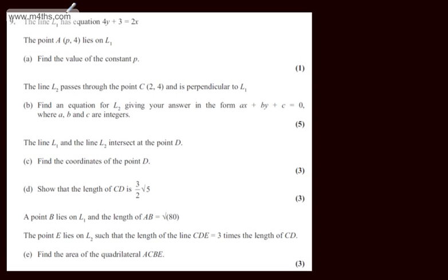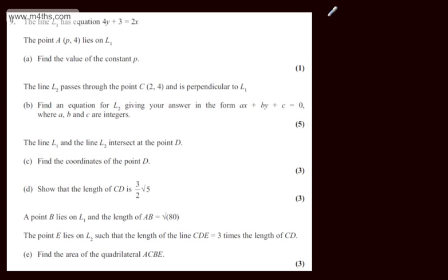In question 9, we're told the line L1 has equation 4y plus 3 is equal to 2x. The point A lies on L1. In part A, we're asked to find the value of the constant p. The question carries one mark. We simply need to substitute these coordinates in.